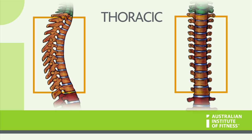The thoracic section, or upper back, consists of 12 vertebrae, T1 through to T12, and has an outward, or convex curve. This is called a kyphosis.